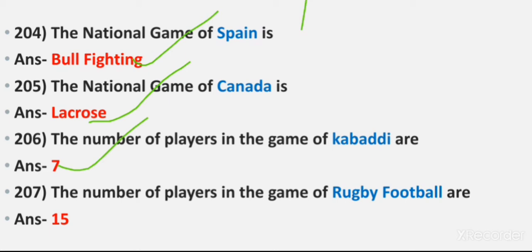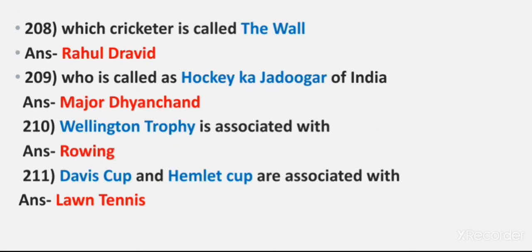Question 207: The number of players in the game of Rugby Football. Answer: 15. Question 208: Which cricketer is called 'The Wall'? Answer: Rahul Dravid. Question 209: Who is called the 'Hockey Jadugar' of India? Answer: Major Dhyan Chand.